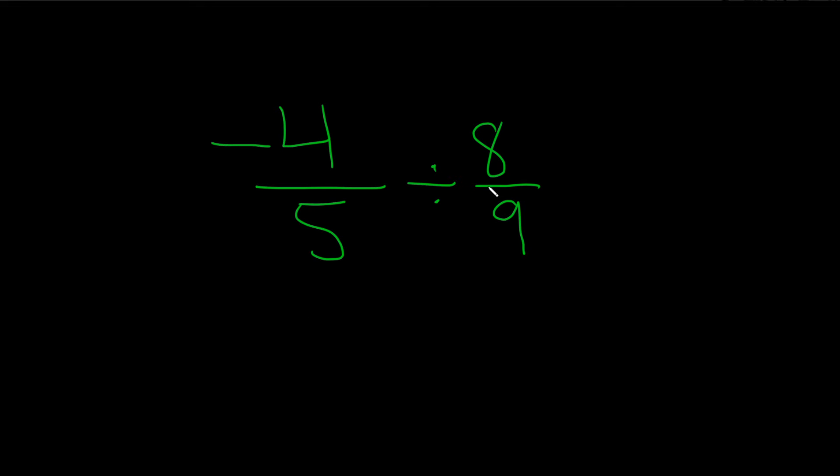Negative 4 over 5 divided by 8 over 9. This is a division problem, and whenever you have a division problem, you want to change it into a multiplication problem, so here's how you do it.